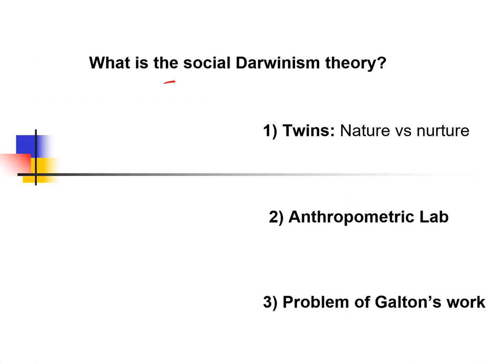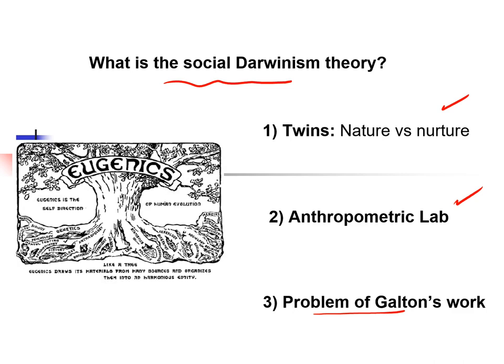We're going to talk now about social Darwinism. Galton was very interested in applying the ideas of Darwin to human evolution. As we watched in the video, I want you to remember the examples of twins and the anthropometric lab — that was something very positive, and this is how human genetics started. Later we will talk about the problems of Galton's work, which is eugenics.